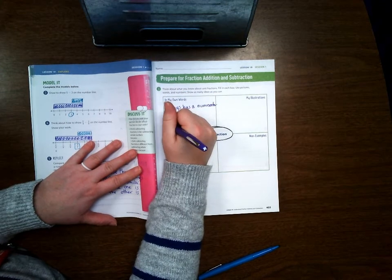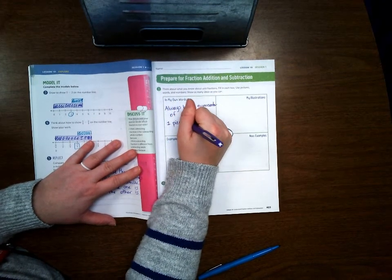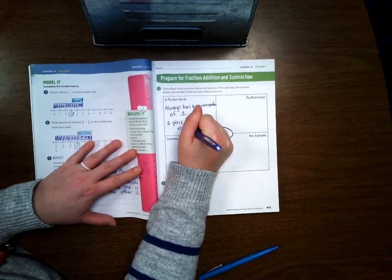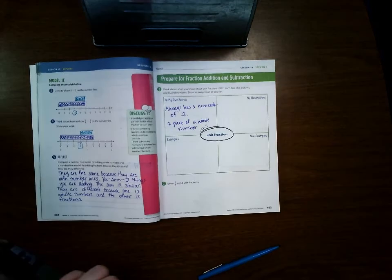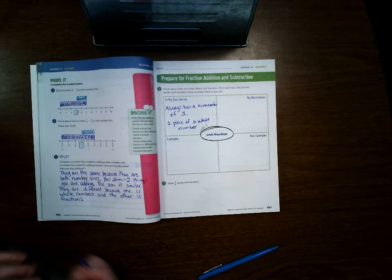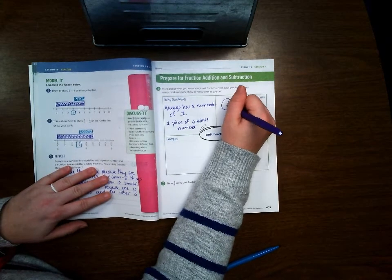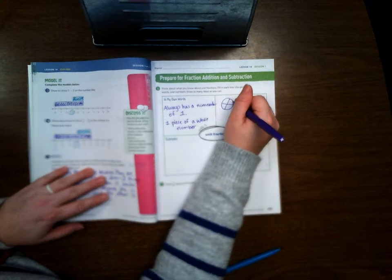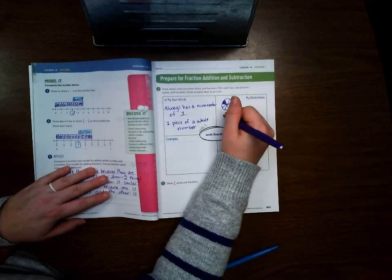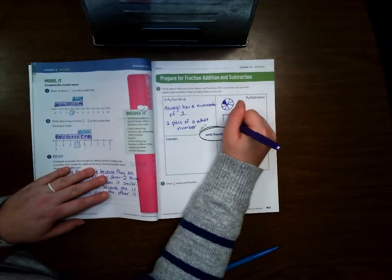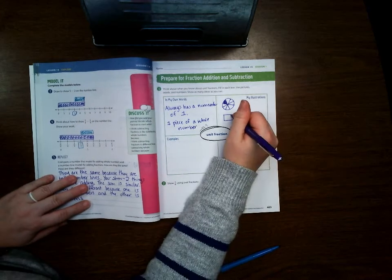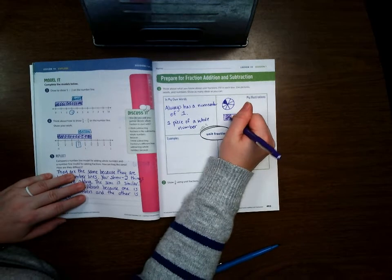...and it is one piece of a whole number. Okay, so an illustration for it, if you'd like to draw your own you can, or you can draw one similar to mine. I'm going to make two illustrations here actually, so I'm going to make a circle graph and I'm going to shade one piece of the bar graph.